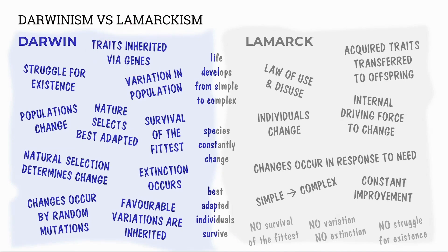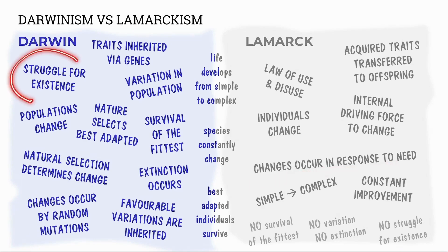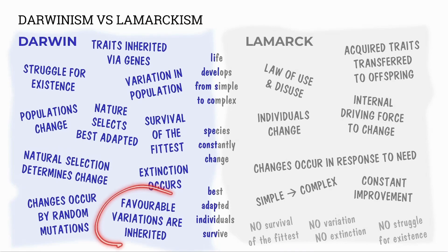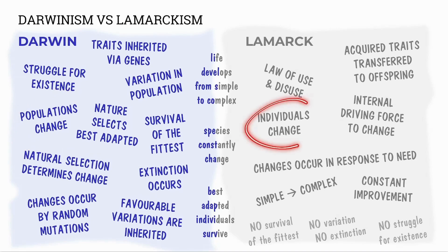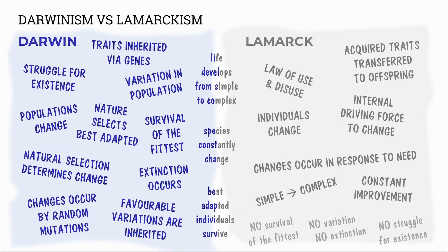Comparing Darwin with Lamarck, Darwin's key points are: traits are inherited via genes; there is variation in the population; change occurs by random mutations; there is a struggle for existence; there is survival of the fittest; nature selects the best adapted through natural selection, and favourable variations are inherited; extinction occurs when less adapted individuals die out; and populations change over time. Darwin and Lamarck also agree on some aspects: life develops from simple to complex, species constantly change, and the best adapted individuals survive — like the long-necked giraffes.